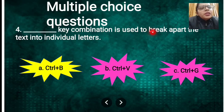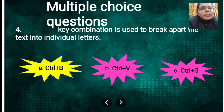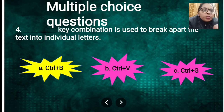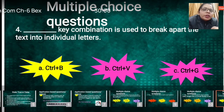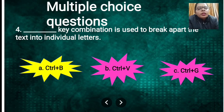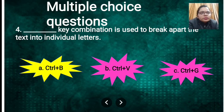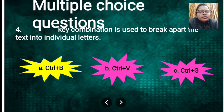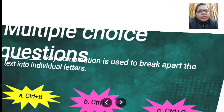Next MCQ: which key combination is used to break apart text into individual letters? If you have text and want to break it apart, the shortcut is Ctrl+B — you use Ctrl+B to give space between individual letters.